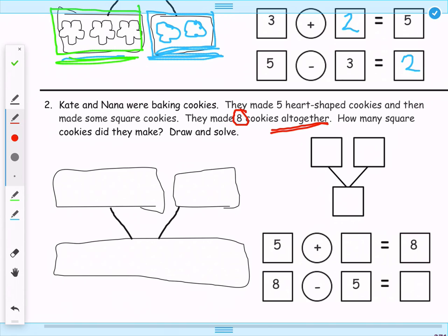So what I'm going to do is I'm going to come down here, and I'm going to draw 8 cookies: 1, 2, 3, 4, 5, 6, 7, 8.